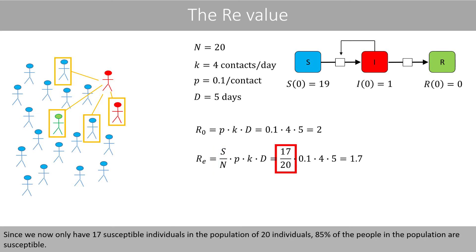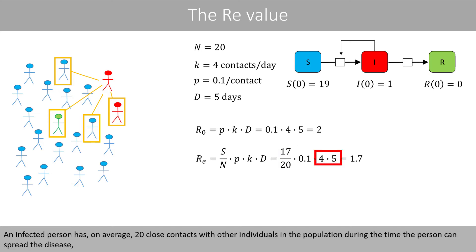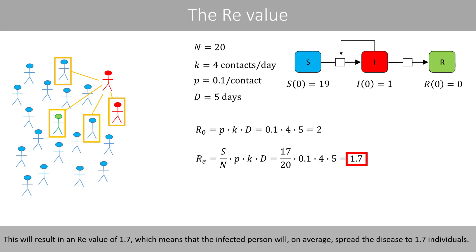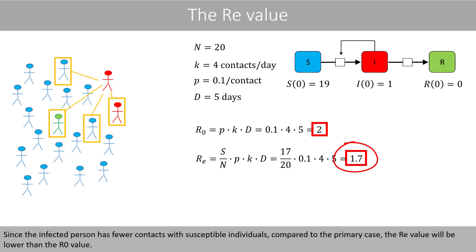Since we now only have 17 susceptible individuals in a population of 20, 85% of the people in the population are susceptible. An infected person has, on average, 20 close contacts with other individuals during the time they can spread the disease, where 85% of these contacts are with susceptible people and 15% are with infected or recovered individuals. This will result in an Re value of 1.7, which means that the infected person will, on average, spread the disease to 1.7 individuals. Since the infected person has fewer contacts with susceptible individuals compared to the primary case, the Re value will be lower than the R0 value.